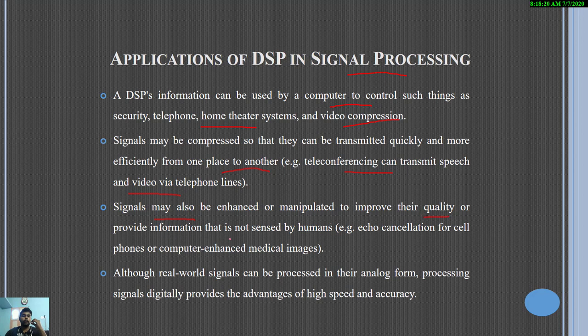Signals may also be enhanced or manipulated to improve their quality or provide information that can be sensed by humans — for example, echo cancellation for cell phones or computer-enhanced medical images. Although real-world signals can be processed in their analog form, processing signals digitally provides advantages of high speed and accuracy. This is one of the major advantages of digital signal processing. Thank you.